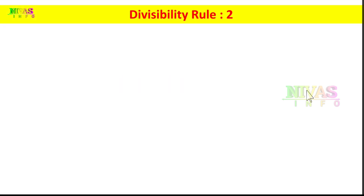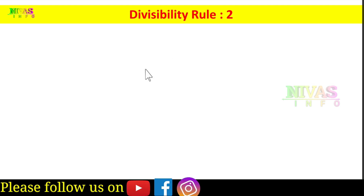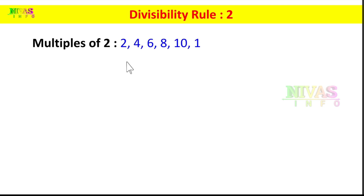Divisibility Rule 2 is very easy. For example, here we have 2. What are the multiples of 2? 2, 4, 6, 8, 10, 12, 14, 16, and so on. These are the multiples of 2.